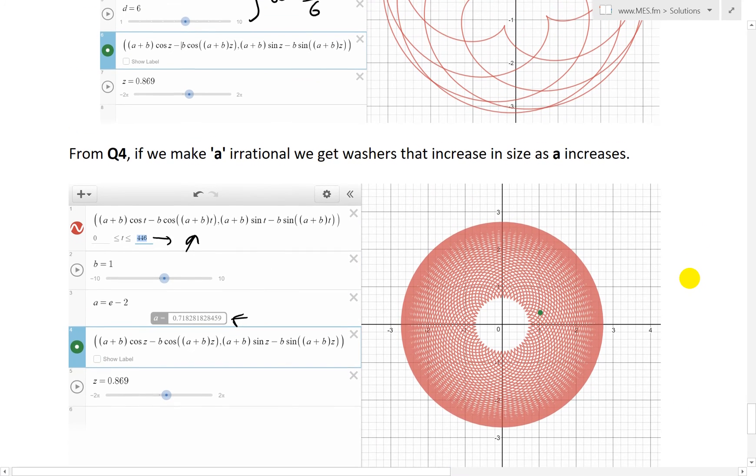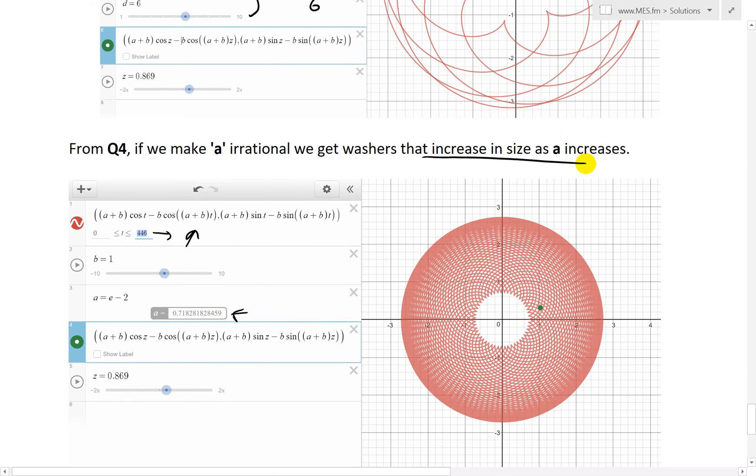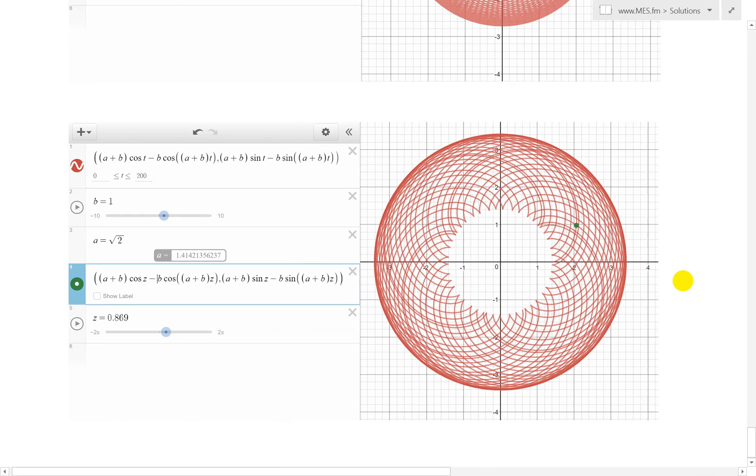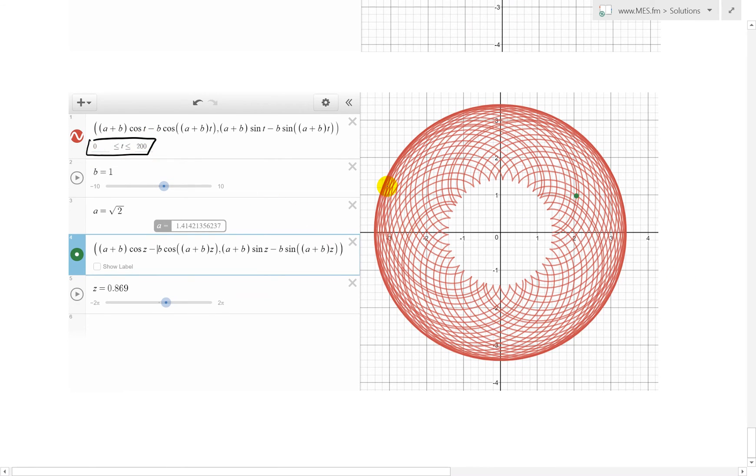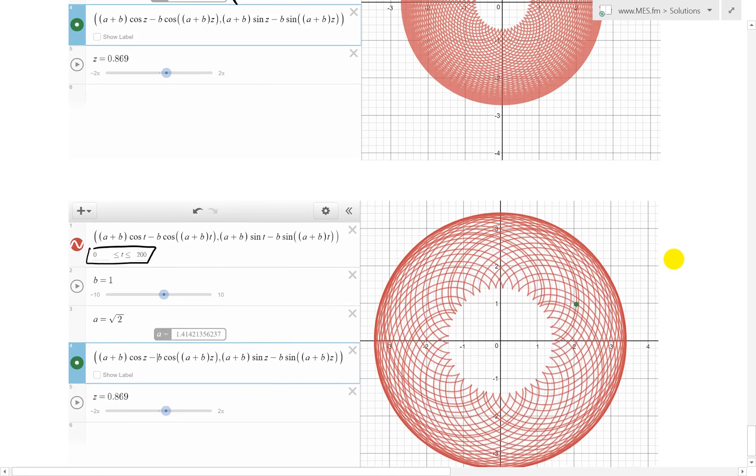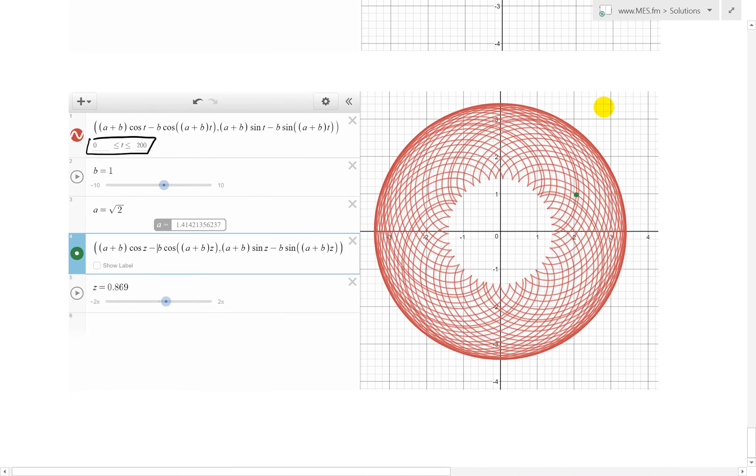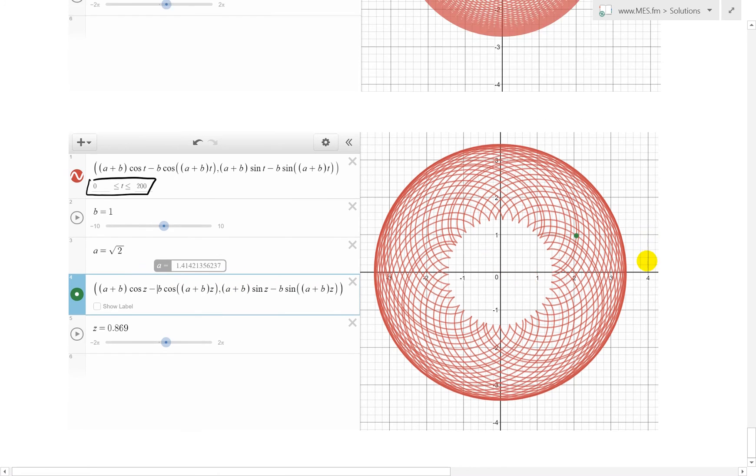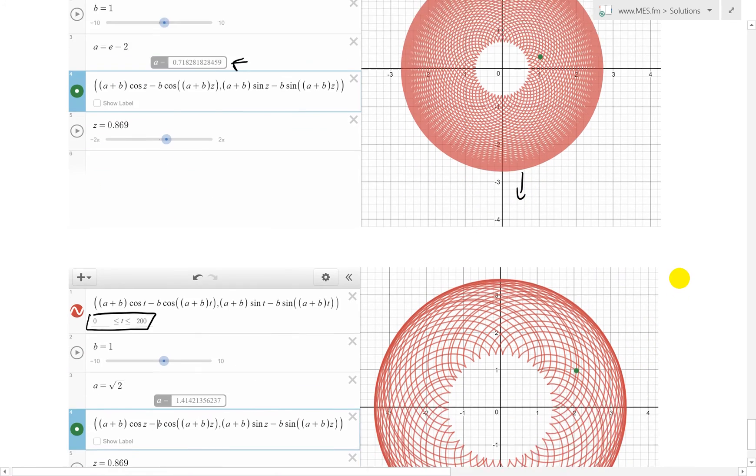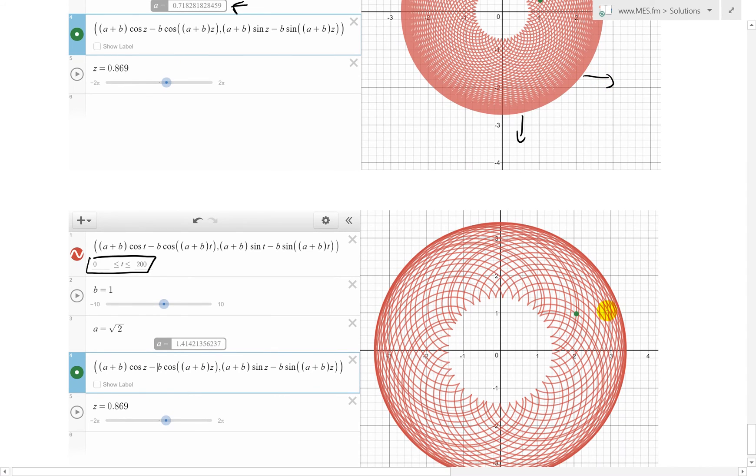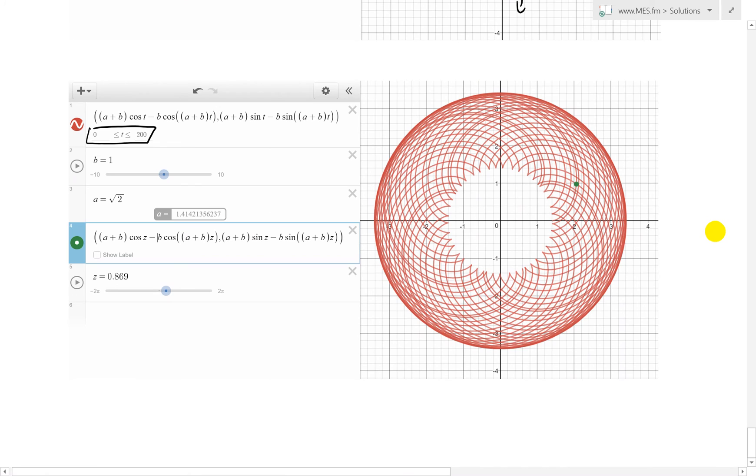And also what happens is, the washers increase in size as a increases. And again, based on whatever these are. If you go to infinity, and it's irrational, then you're going to have it perfectly, like, appears perfectly solid. So this is 0.718. If you increase in size to, for example, here, square root 2. And this is 1.41. And as you can see, this does get a bit bigger here. So this is bigger size over here.